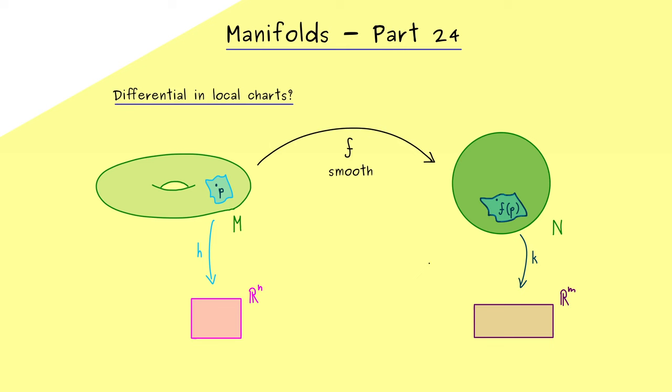Now please recall: the map f is smooth if and only if the corresponding map on the lower level is smooth as well. In other words, here on the lower level we have an ordinary differentiable map. We call this one f̃, and it's a nice map from R^n into R^m. Hence now we can ask the question: what is the connection of the differential of f with the differential of f̃?